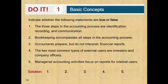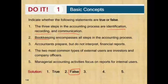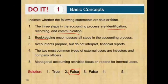Let's take a look at a quick exercise: indicate whether the following statements are true or false. Number one — the three steps in the accounting process are identifying, recording, and communicating. That is correct — true. Number two — bookkeeping encompasses all steps in the accounting system. It does not; bookkeeping is just the recording part — false. Number three — accountants prepare but do not interpret financial reports. Absolutely not — accountants both prepare and interpret financial reports, and they're the best at it because they know the ins and outs of the numbers.